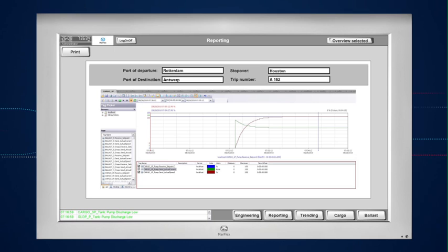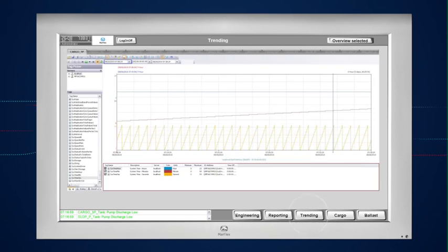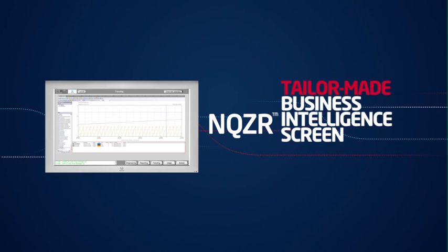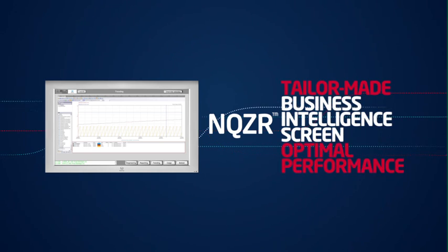All reports on cargo conditions and system maintenance can be found in the reporting overview screen. In the trending overview screen, all measured data are presented in an analytical way using graphics and tables. It is Encuser's tailor-made business intelligence screen for optimal performance.